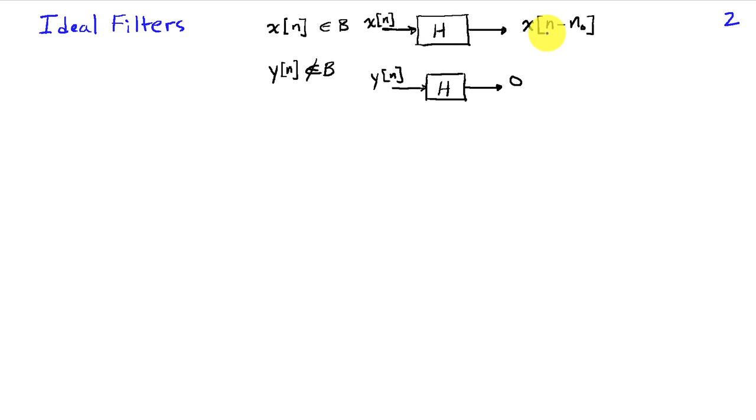then it's going to go through the filter with, at worst, a delay of n-naught samples. We consider a delay, it doesn't change the shape of the signal, and that's a rather mild effect. So usually a delay is considered distortion-less.